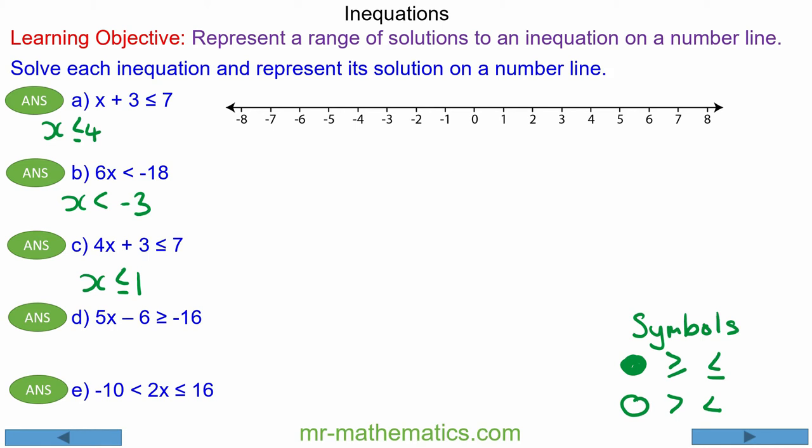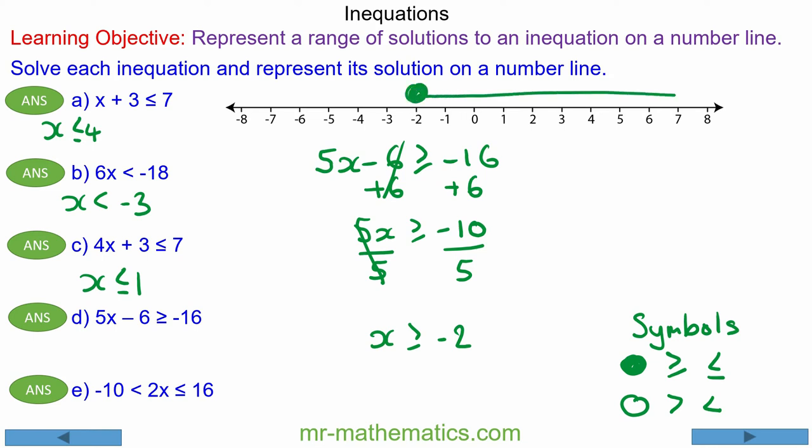For question D we have 5x - 6 is greater than or equal to -16. So we'll use the balance method and add 6 to both sides. Negative 6 add 6 will make 0 so that's gone. So 5x is greater than or equal to -10. We'll divide both by 5. So x will be greater than or equal to -10 divided by 5 which is -2. So a full circle above -2 going to the right.